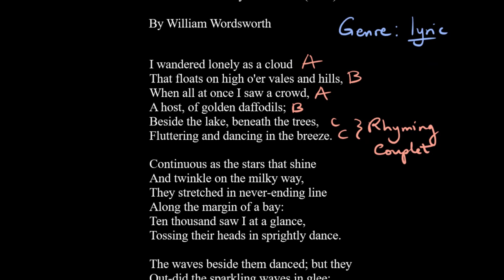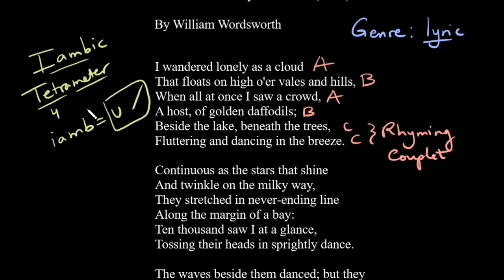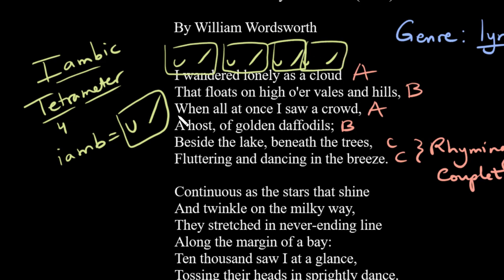We can talk about the meter as well. Each poem has a kind of meter, and in this case we have iambic tetrameter. The word meter means rhythm, the word tetra means four, and we have four iambs. An iamb is basically a pattern where you have two syllables — the first is unstressed and the second one is stressed. We repeat this pattern four times in each poetic line, as in 'I wandered lonely as a cloud,' where you can see four of these iambic units.